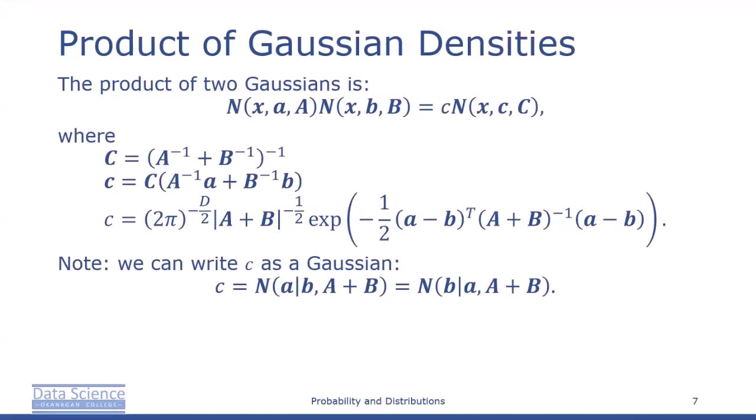When we talk about linear regression, we need to compute a Gaussian likelihood. Also, we may wish to assume a Gaussian prior. We can apply Bayes' theorem to compute the posterior, which results in multiplication of a likelihood and the prior. That is, at the end of the day, we need to know how to multiply two Gaussian densities.